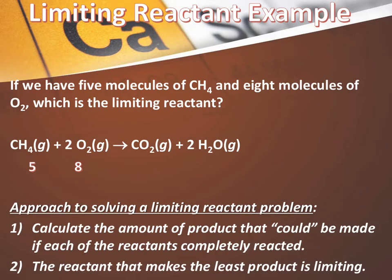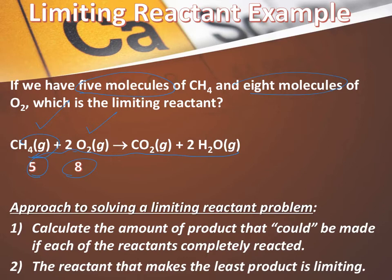Here's a simple example: methane in a combustion reaction. The problem gives you 5 molecules of methane and 8 molecules of oxygen, and asks which is the limiting reactant — CH4 or oxygen? Can you tell just by looking at the chemical equation? Absolutely not. Do not assume that because there are fewer molecules of CH4, it must be limiting. It depends on the mole ratio of the two and the molar mass of the two. You really have to go through a calculation to determine which reactant is limiting.